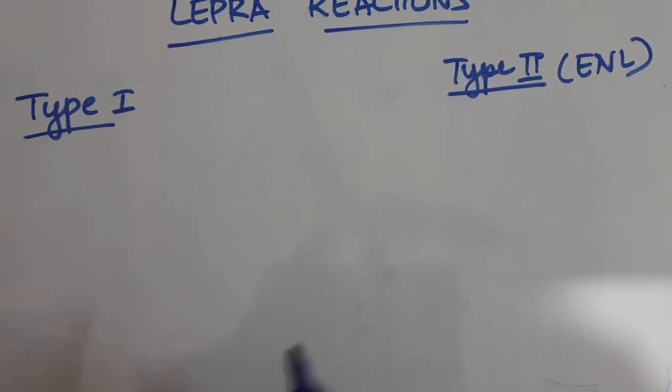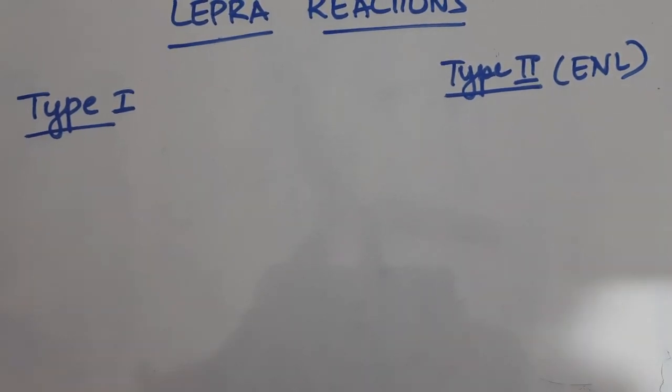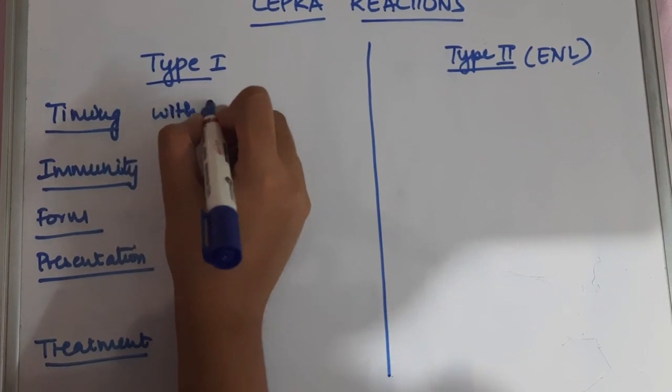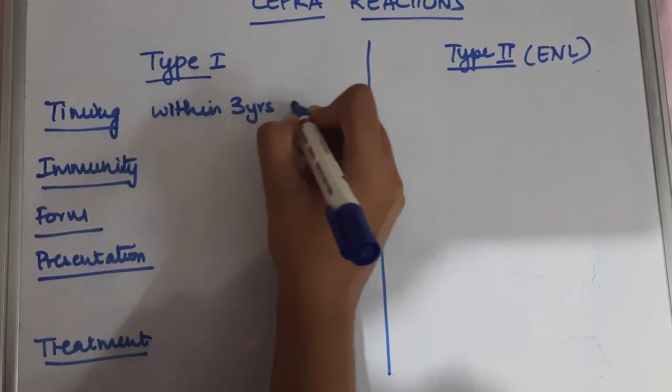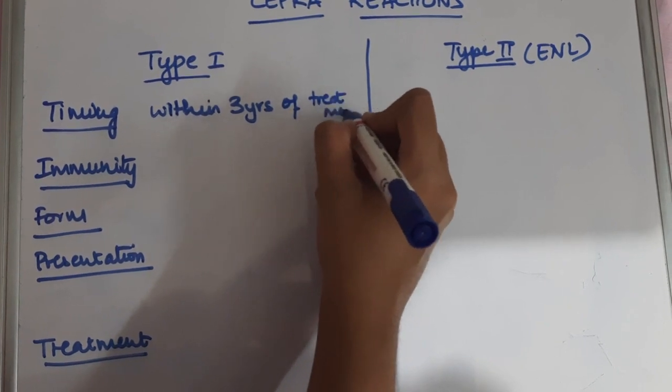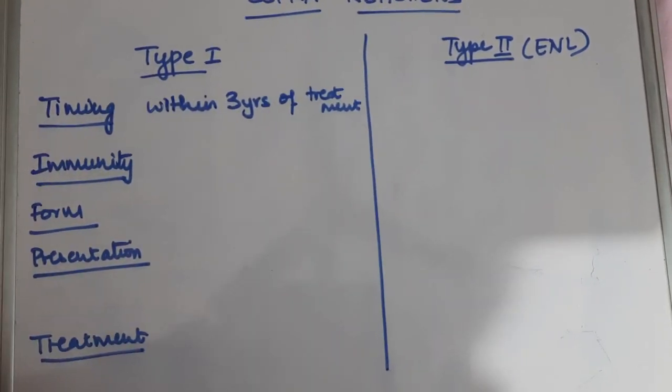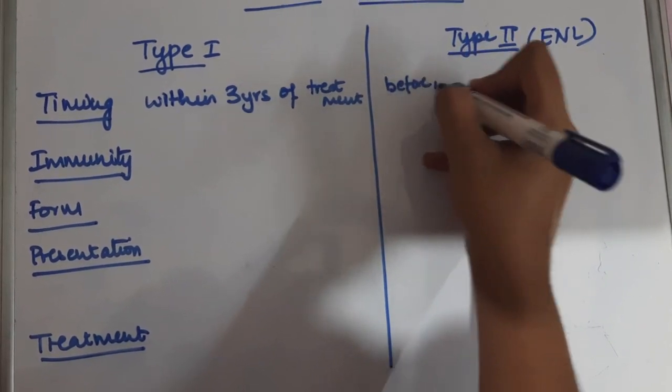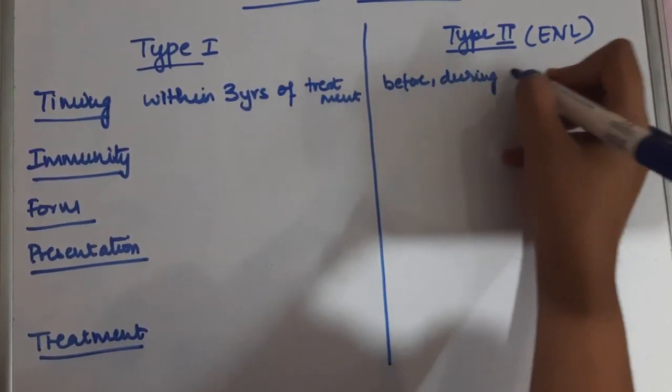Now let us try to understand both of them on the basis of a few characteristics. The first one is timing of both of the reactions. Type 1 lepra reaction is seen within a period of three years of treatment, whereas type 2 reactions can be seen anytime before, during, or after treatment.